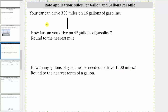Going back to the given information, the given information can be written as two separate rates. We can express the rate as 350 miles per 16 gallons, or 16 gallons per 350 miles.